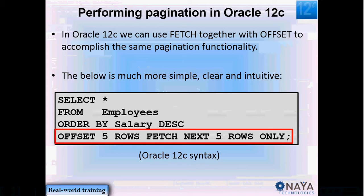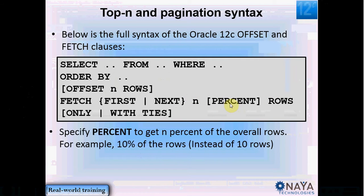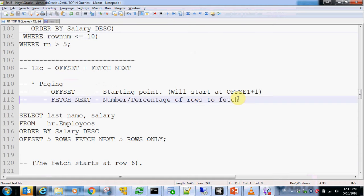This is how you perform top-end queries and pagination in Oracle 12c. Let's take a look at the full syntax. We've seen your SELECT statement with the ORDER BY, followed by the optional OFFSET clause — should you omit the offset, it starts at the first row. Then FETCH FIRST N ROWS or NEXT if using an offset, and you can use an optional PERCENT keyword — meaning instead of getting N rows, for example 10 rows, you can get a certain percentage of the rows, for example 10% or 20% of the rows.